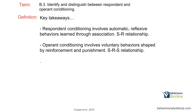A couple of key takeaways. Respondent conditioning involves automatic reflexive behaviors learned through association — things like heartbeat, sweating, and blinking that we don't have control over. It is a stimulus-reflex relationship. Operant conditioning involves voluntary behaviors shaped by reinforcement and punishment. We use the word voluntary loosely here, since behavior is controlled and evoked by the environment — but these are actual behaviors, not reflexes. Operant conditioning contains a consequence; it is that SRS relationship.